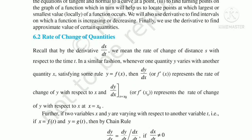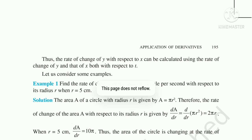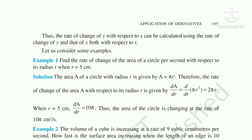Now for the first example: find the rate of change of the area of a circle per second with respect to its radius r when r = 5 cm. We know the area of a circle is A = πr². We need to find the rate of change with respect to r, so we differentiate A = πr² with respect to r to get dA/dr.